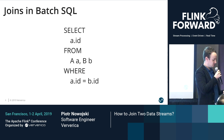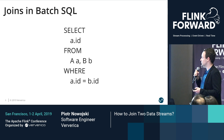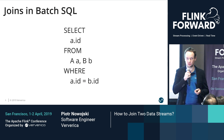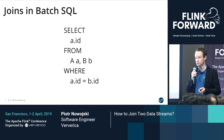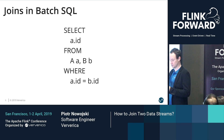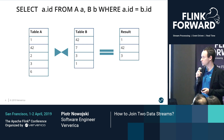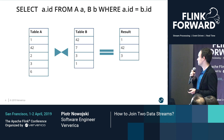Let's start with joins in Batch SQL. I'm pretty sure that most of us are familiar with the syntax of joins. Here we are trying to join two tables, A and B, on one simple join equality condition on the ID column. The semantic is also pretty simple. Whenever we have two records that are equal, we are outputting them in the result — like 1, 42, and 3.